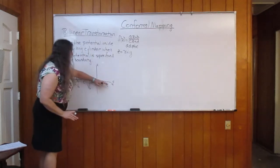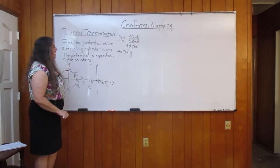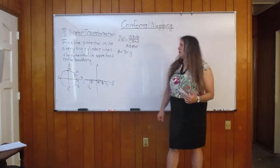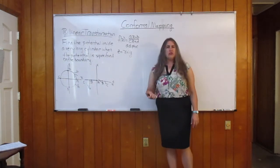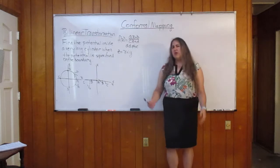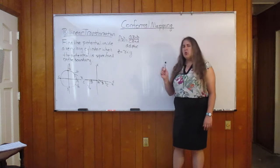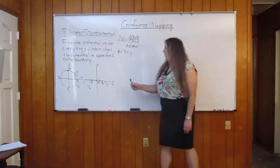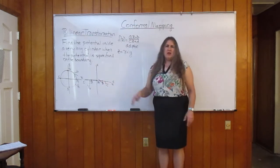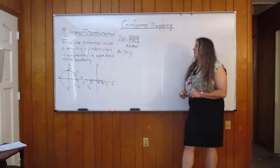By means of the proper transformation function, we're able to map that circle over to a straight line. This interior region maps over to the upper half plane of the w-plane. I pointed out that although you could guess at the transformation function, there's a procedure for deriving a bilinear transformation with the proper properties. I also want to justify why we can write down an analytic function satisfying boundary conditions and map it back as the solution.